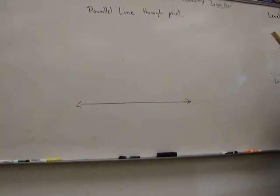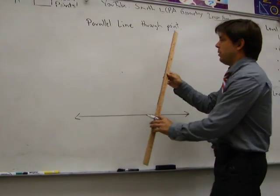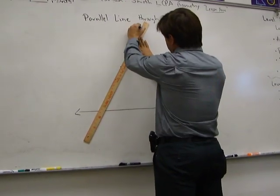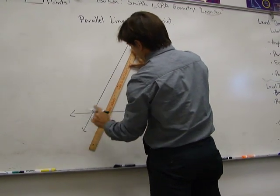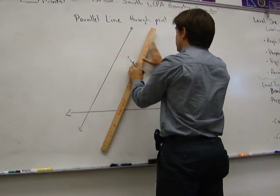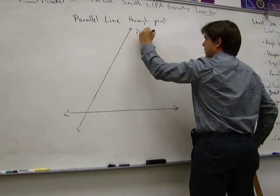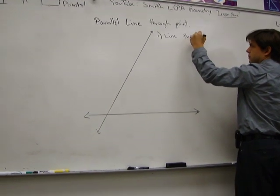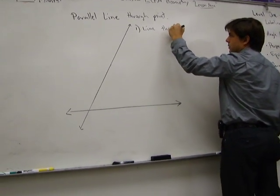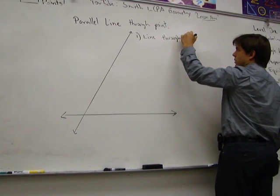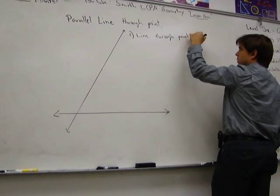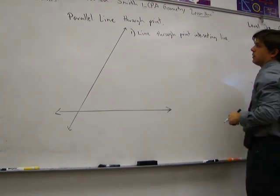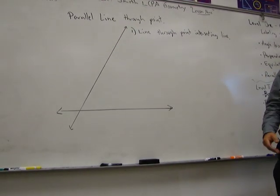Okay, step one. Construct a line through the point intersecting the original line. So it goes right through that point. Line through the point, intersecting the line.